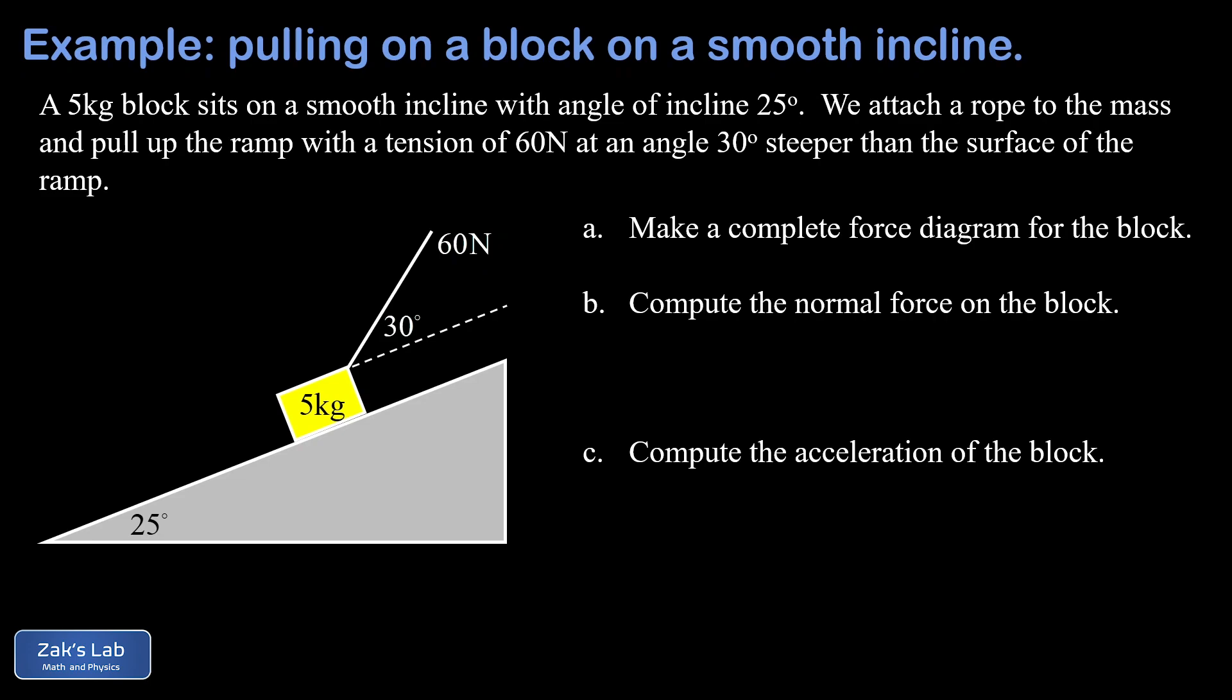Now we're also pulling on this block with a force of 60 newtons, so we're pulling the block up the ramp, and that force is inclined at 30 degrees above the surface of the ramp. We have three basic parts in the problem.